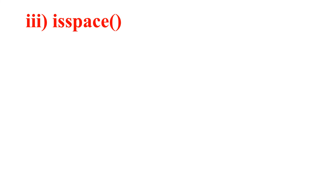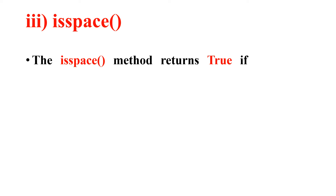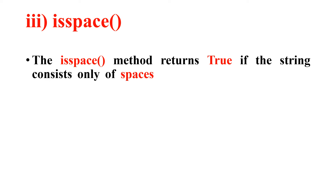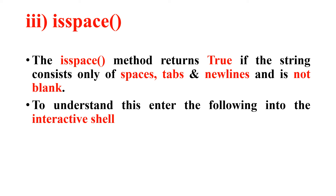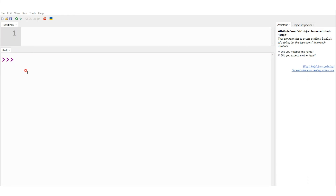Now let me consider the third string method, which is isspace. The isspace method returns true if the string consists only of spaces, tabs, and new lines and is not blank. That means it can contain only spaces, tabs, and new lines. To understand this much better we will enter the following into the interactive shell.